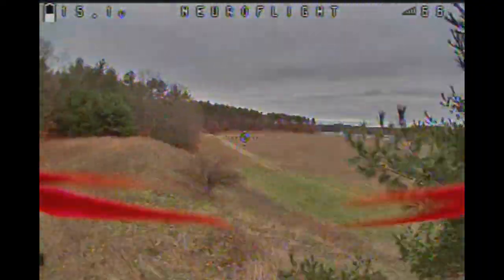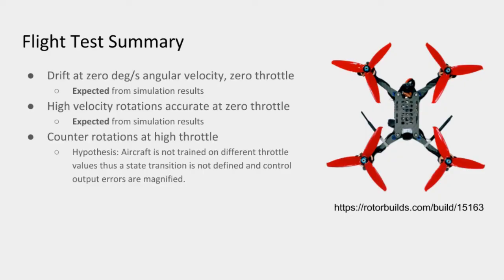Our current research is now focused on expanding the flight envelope and further advancing the performance. As for a summary of the flight test, we found that drifts occur when the angular velocity is at zero degrees per second, and also when there is zero throttle input. However, from our simulation results, this was expected behavior.